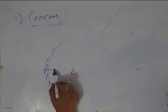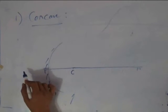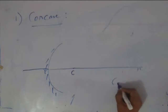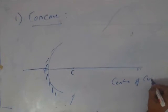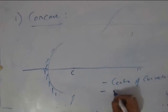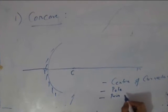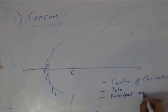The line joining PC and extended beyond is called the principal axis. So we have a center of curvature, we have a pole and we have principal axis. Mind the spellings, P-R-I-N-C-I-P-A-L principal axis.